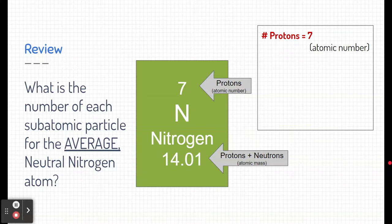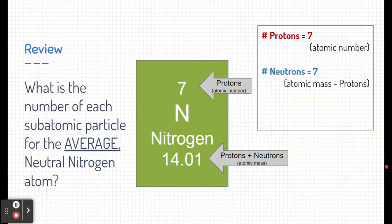means that there's 14 protons and neutrons. So if we subtract the number of protons, that leaves us seven neutrons. And so we just take the atomic mass and minus the protons and we can figure out the number of neutrons.